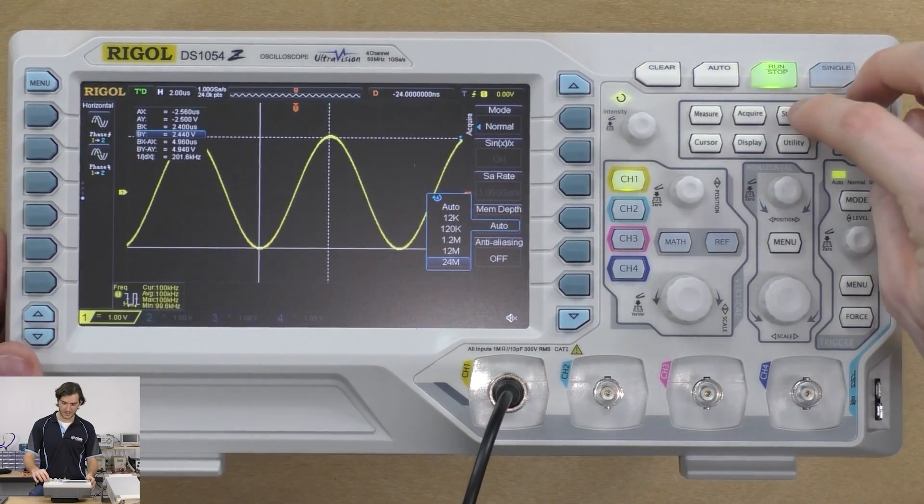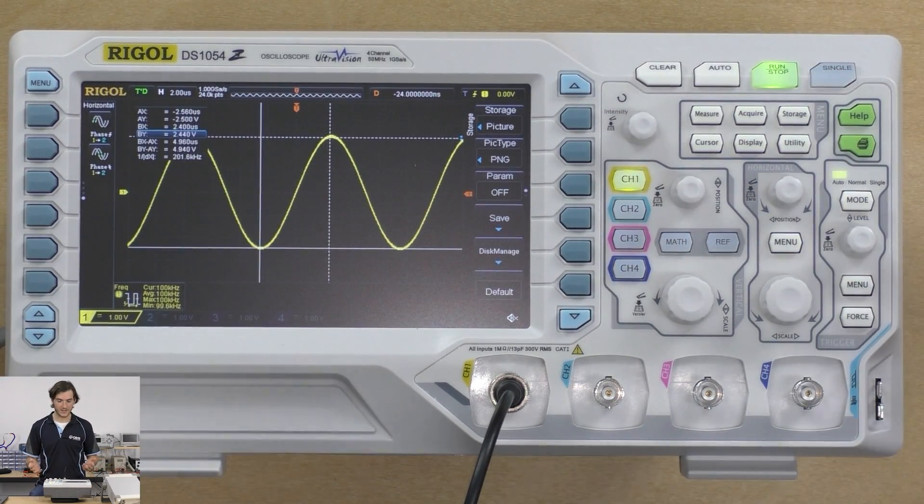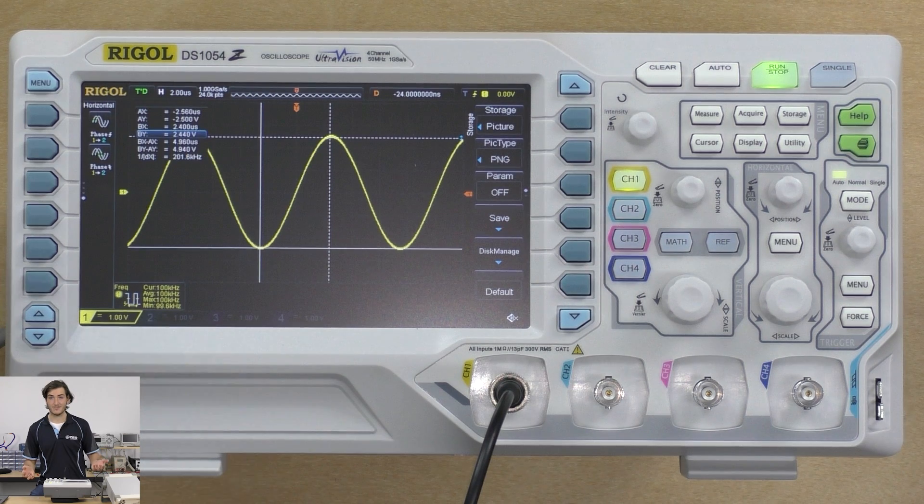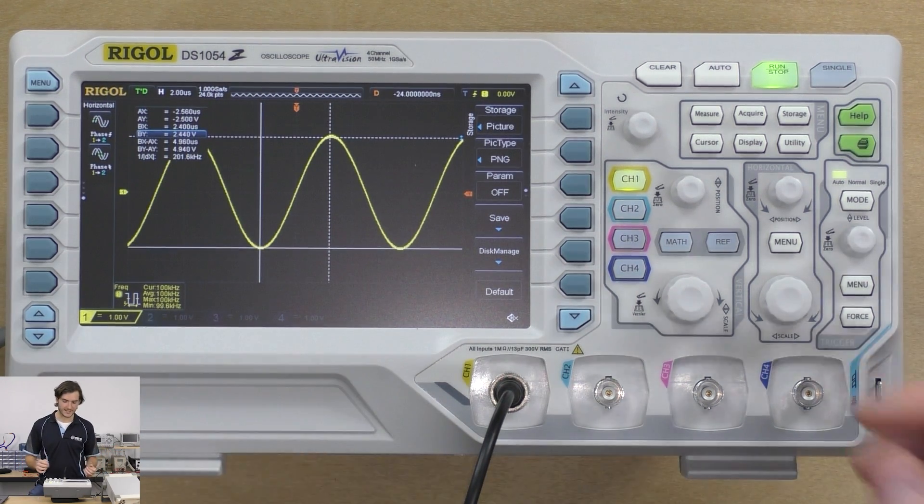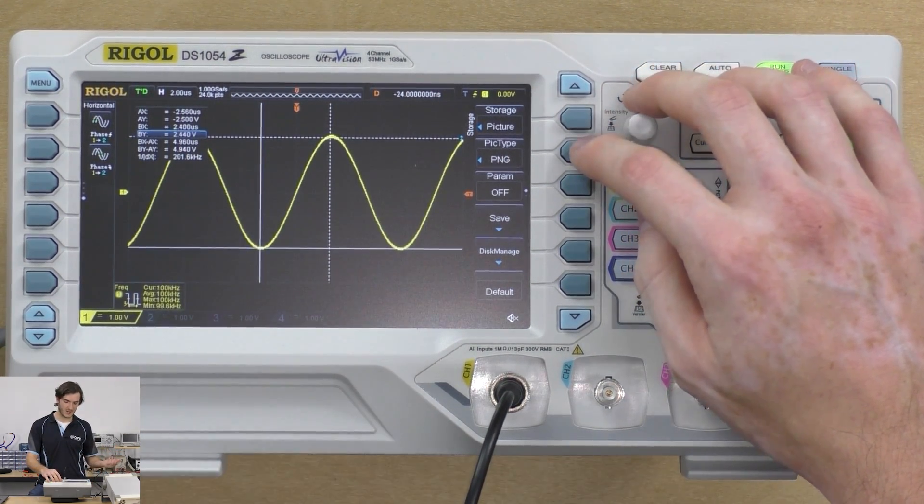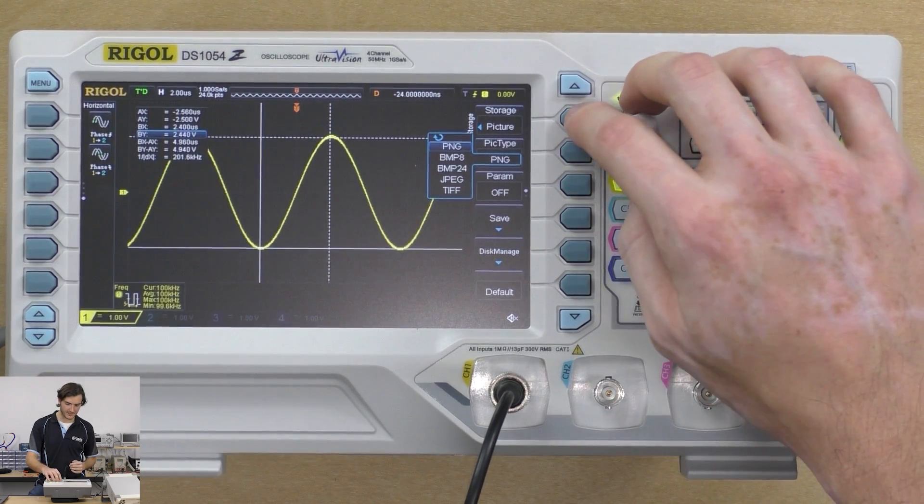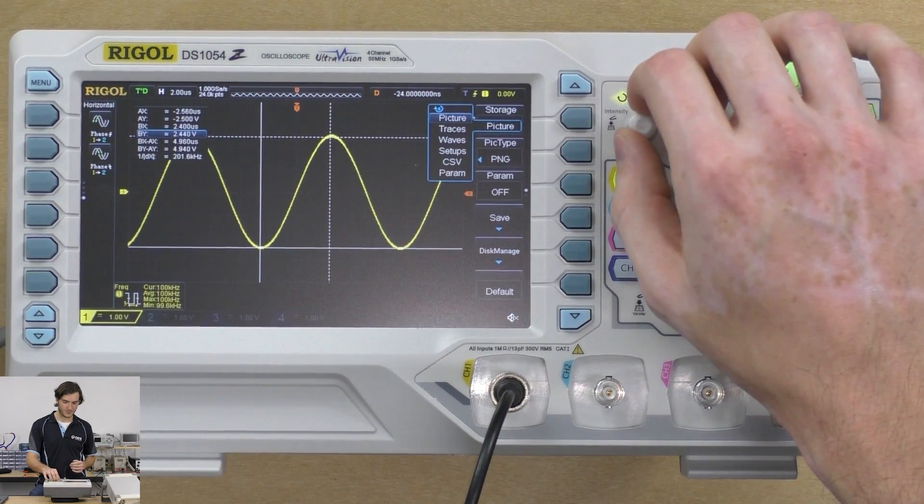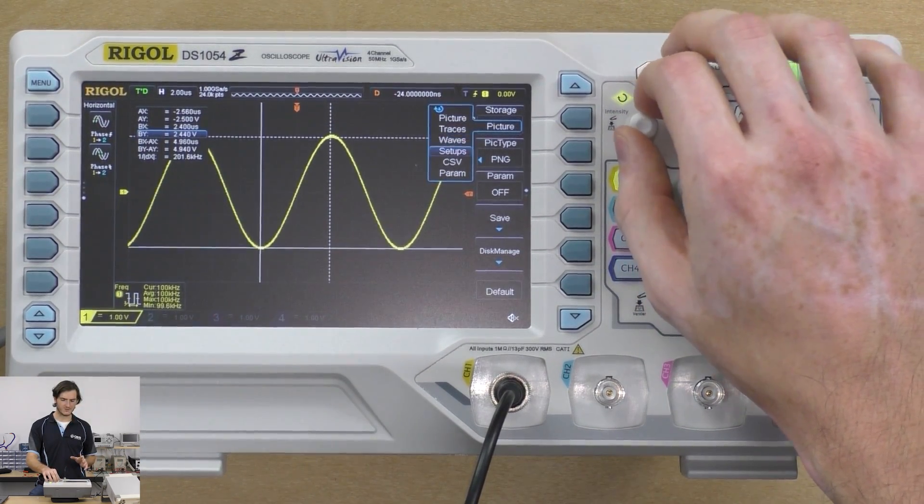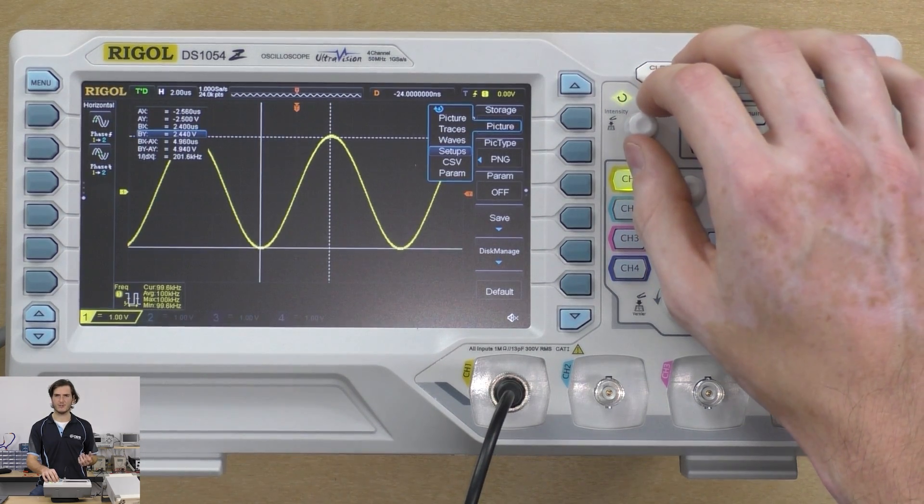We can go into the storage menu. As a digital storage oscilloscope the name implies it can store data. We can store things as pictures with the PNG format and presumably other formats, but we also have the option for Rigol's tracers and waves, their proprietary format that you view with a free piece of software.